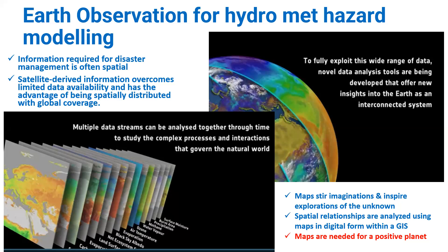Let me speak about earth observation for hydrometeorological hazard modelling. Information required for disaster management is often spatial. Satellite-derived information overcomes limited data availability and has the advantage of being spatially distributed with global coverage. The main challenge we face when trying to manage hydrometeorological hazards and build resilience against disasters is the lack of data. So we are introducing earth observation data sets to address this gap.